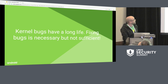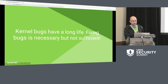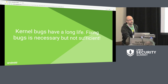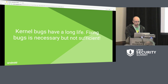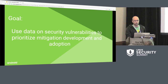Kernel bugs have a long life, and simply finding and fixing kernel bugs is not adequate. Some devices may never get patched. When a bug is reported to the upstream kernel, it's likely not the first time that bug has been discovered — so who knows who else knows about it, how long they've known, and how they've been using it. We need to look beyond just finding and fixing bugs, and into an ecosystem that's resilient against security vulnerabilities.